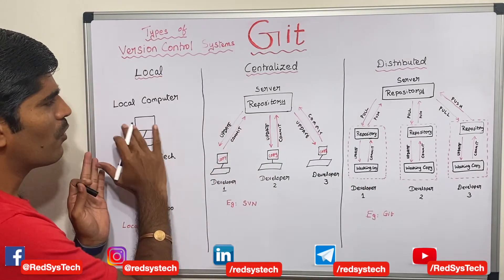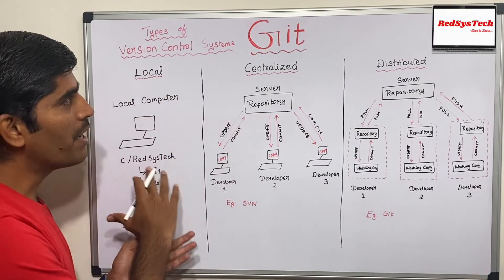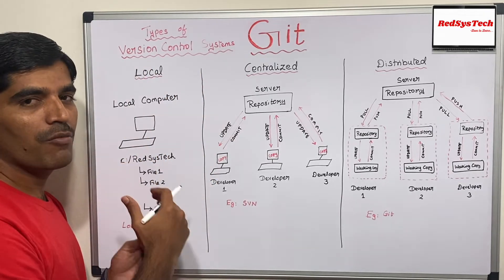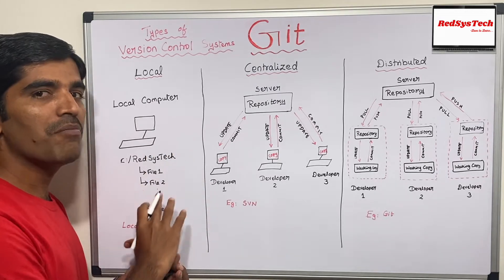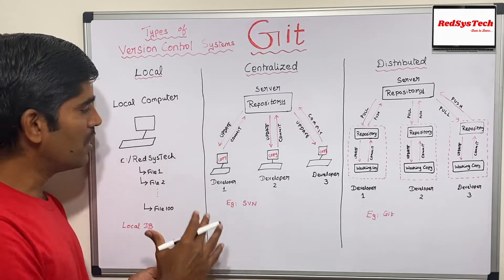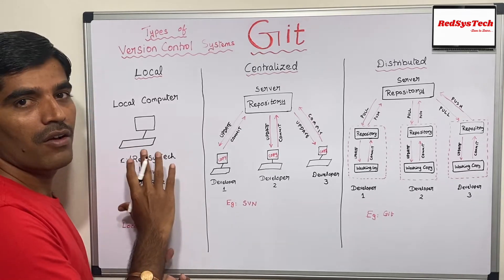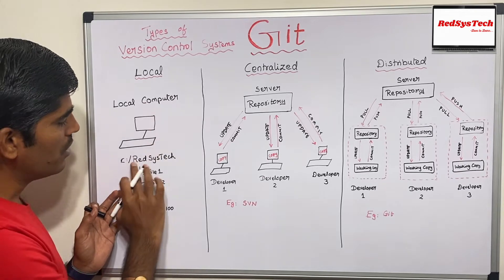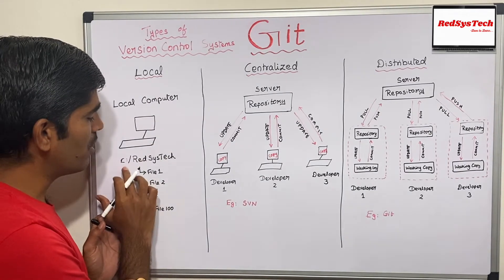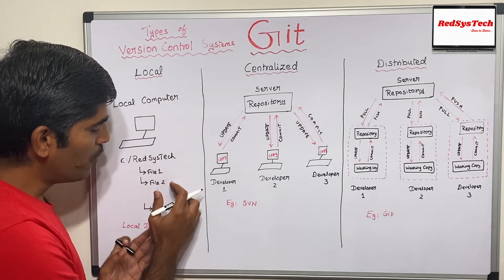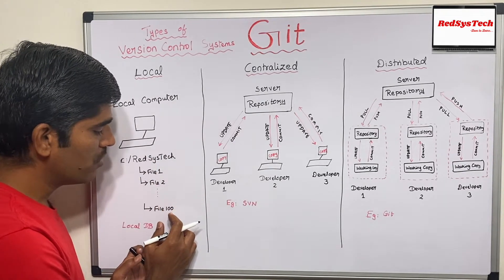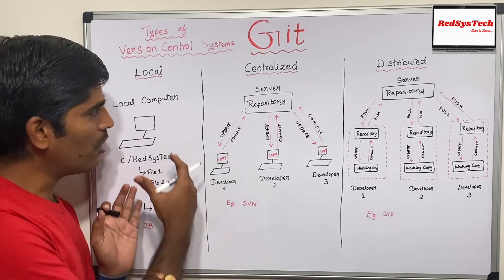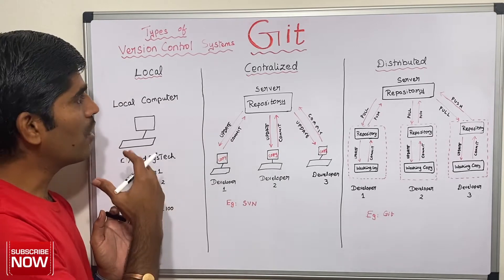Whenever I say local, the name itself means you are going to maintain version control on your local machine. Let's say you have a developer who wants to keep changing his files. You have a local computer with a folder — say a Registech folder — with file 1, file 2, file 100. You keep changing those files and maintaining all those changes in your local machine. That is nothing but a local version control system.